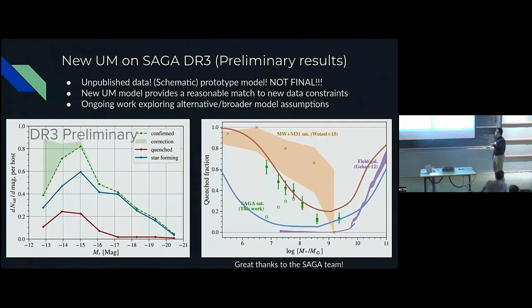If we extrapolate this model down further below 10 to the seven, where there aren't constraints in the field, because of this error function transition, it again enforces a non-zero quench fraction. We're exploring different models and broader assumptions to see if we can allow the model to have a zero quench fraction for the field dwarfs all the way down to 10 to five and allow the quenching for Milky Way satellites. This is something ongoing.